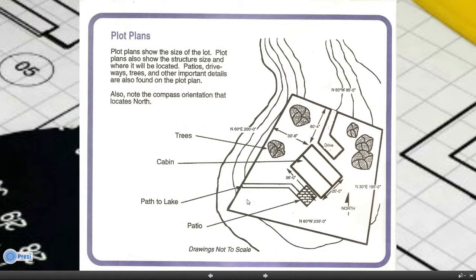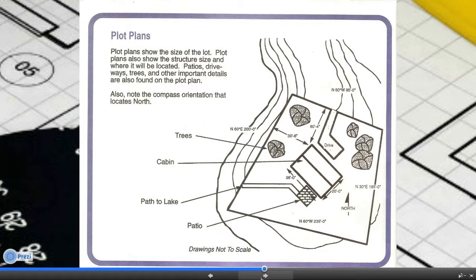And you'll notice here on this example, it shows the house on top of the contour lines, which shows the contour of the property. It also, if you notice, it shows the patio, the cabin, the trees, so the landscaping. And then also notice it always points north.